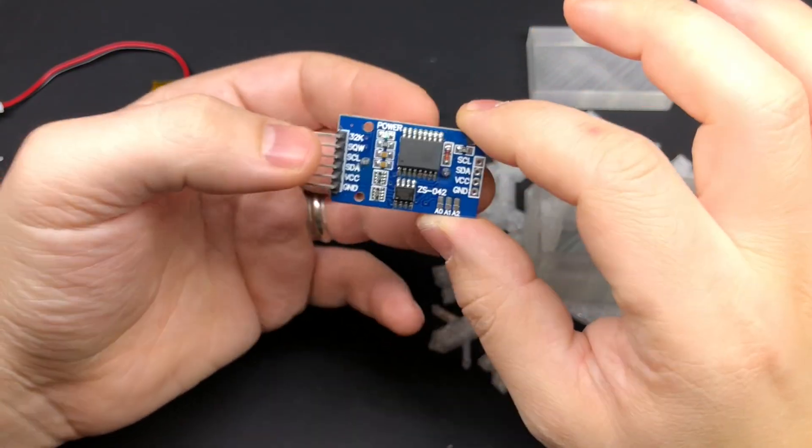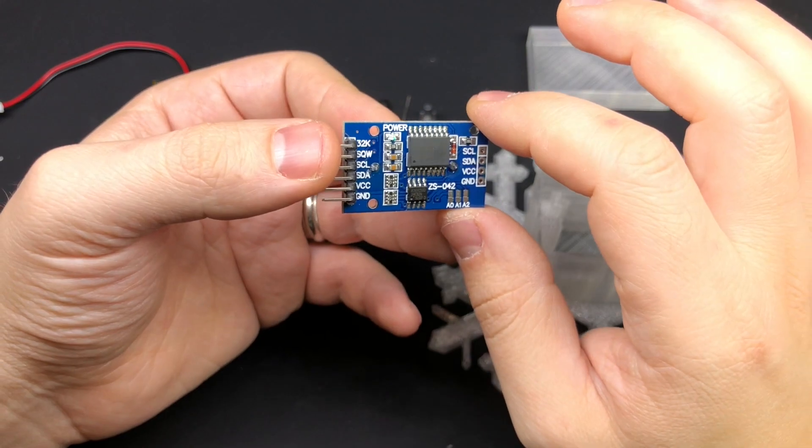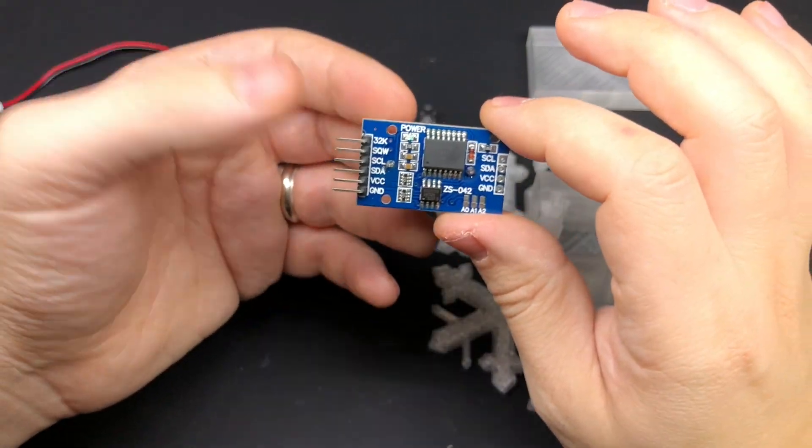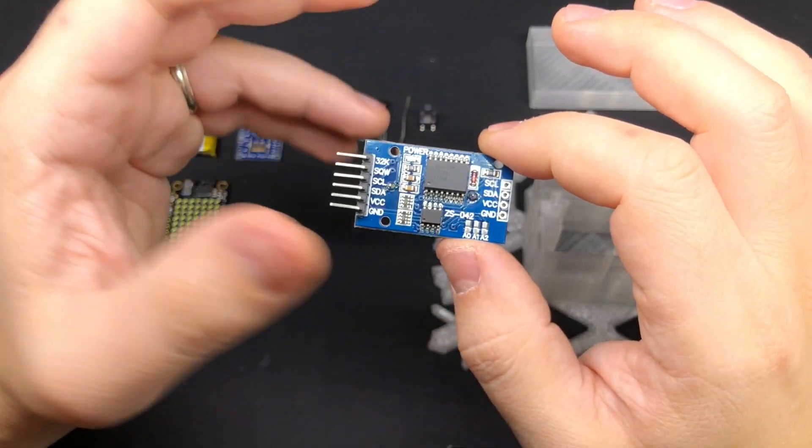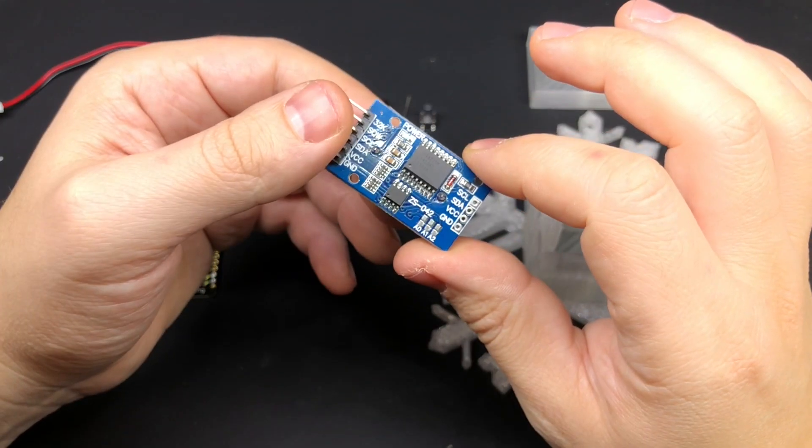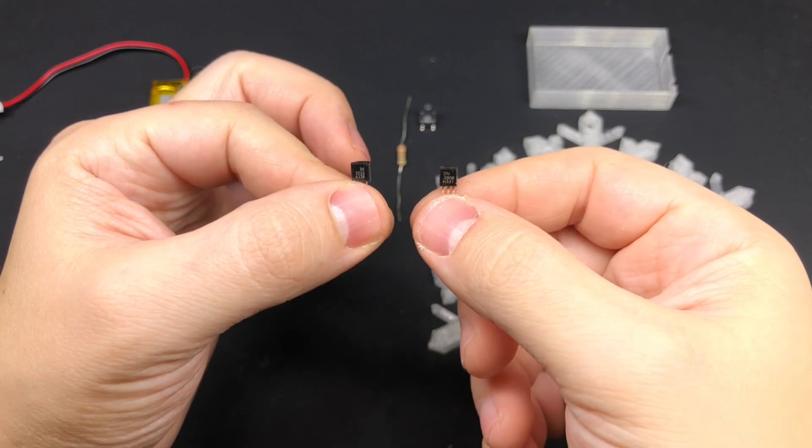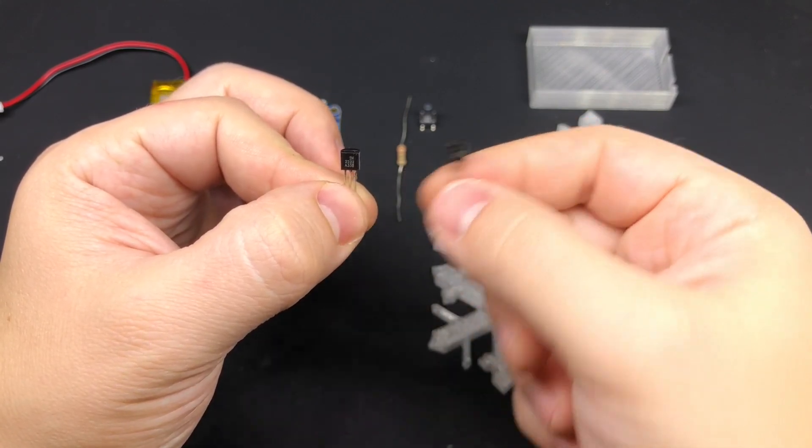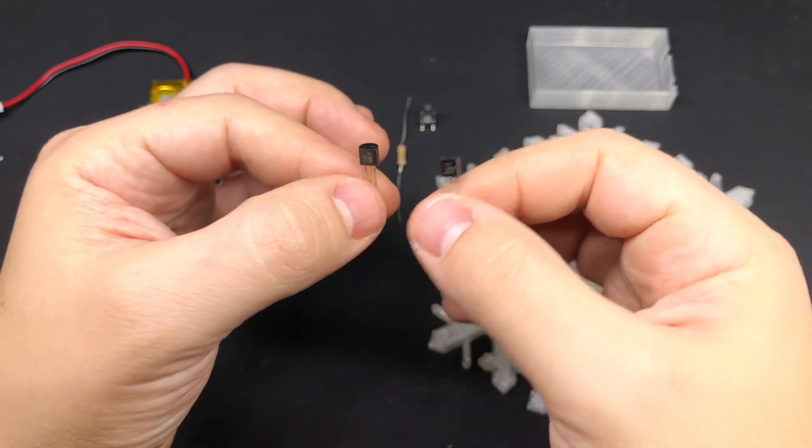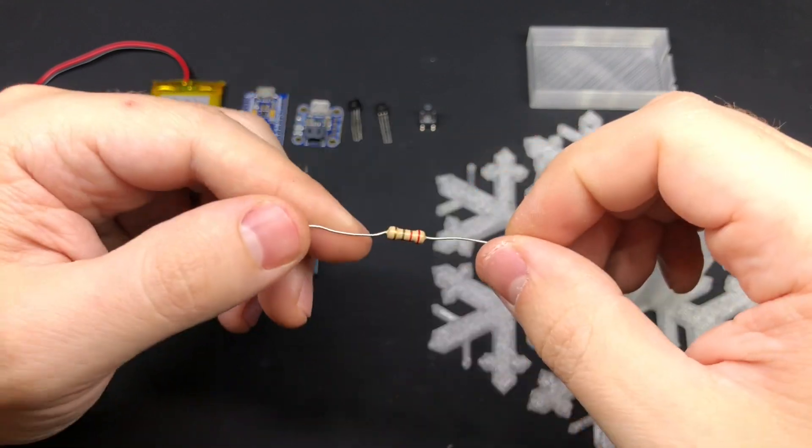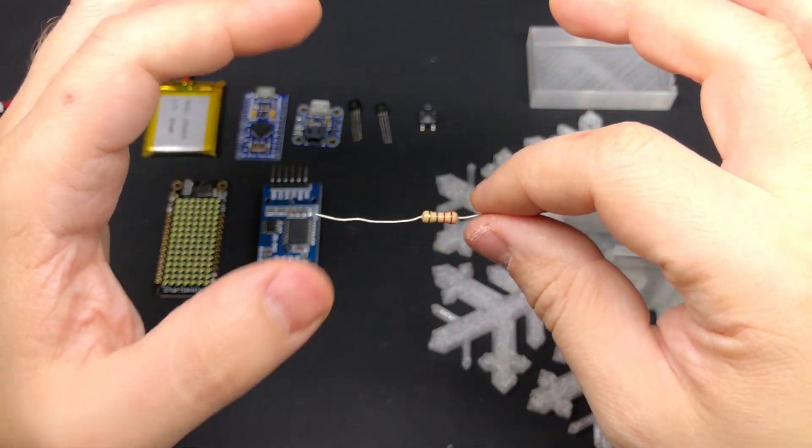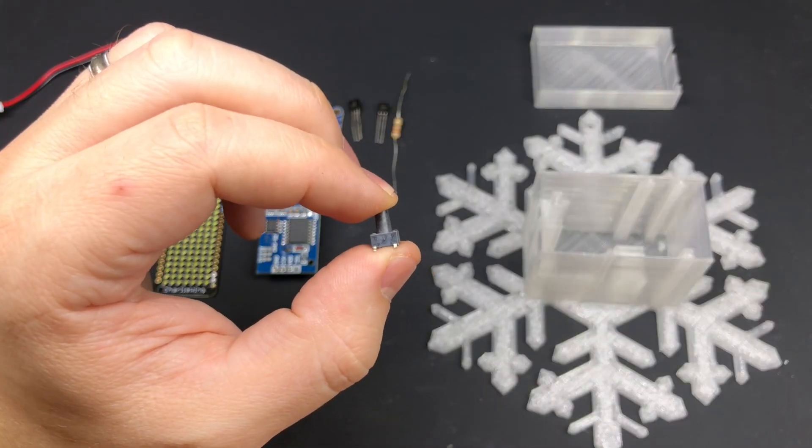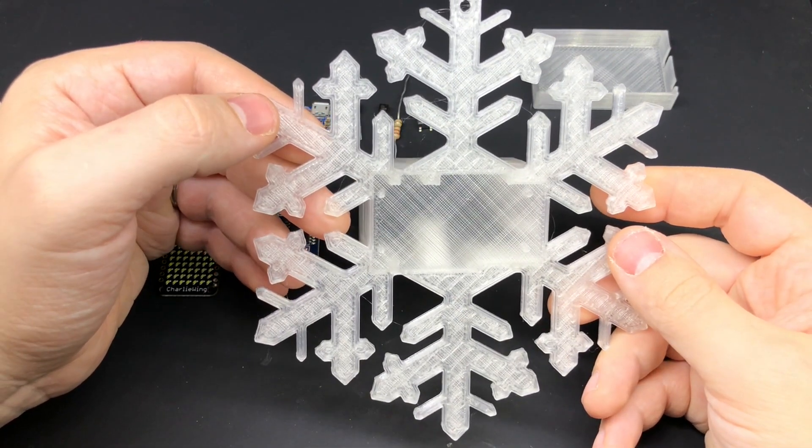I've got a real-time clock module. This one is based off of the DS3231 chip. If you get one that uses that chip, you should be able to use that without making any modifications to the Arduino code that's linked to in the blog post. I've got two different transistors. This one is an NPN transistor and this one is a PNP transistor. We'll be using these for powering it on and off when you press a button. A resistor - the value doesn't matter too much. This one's only 22 ohms. A tactile switch, and then of course the 3D printed snowflake.